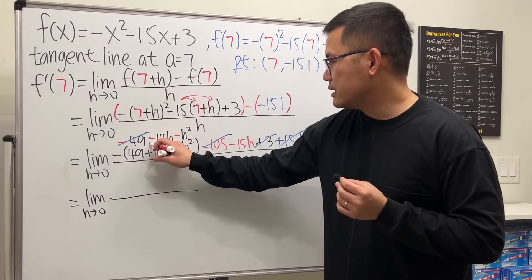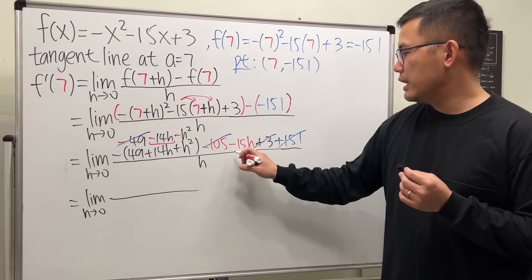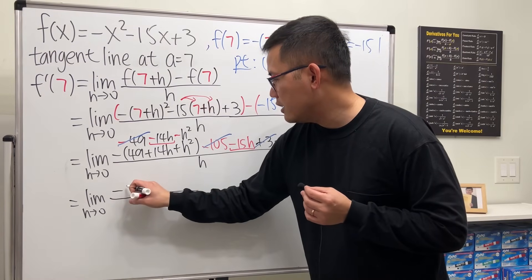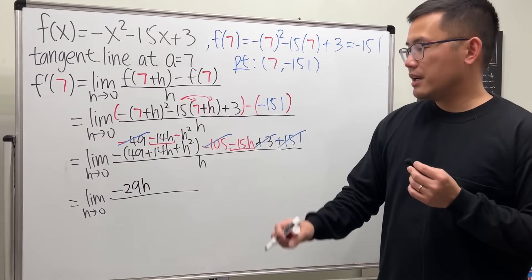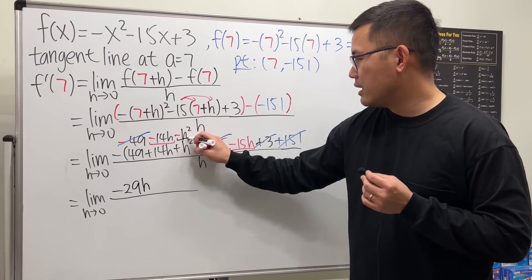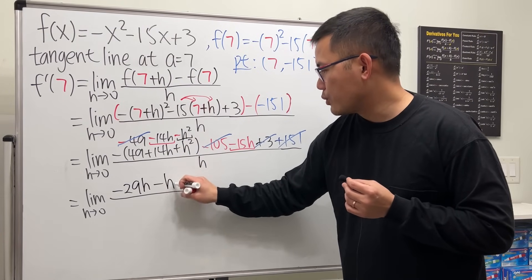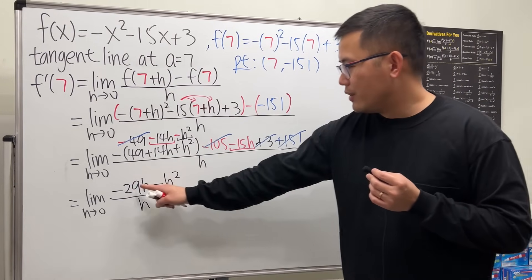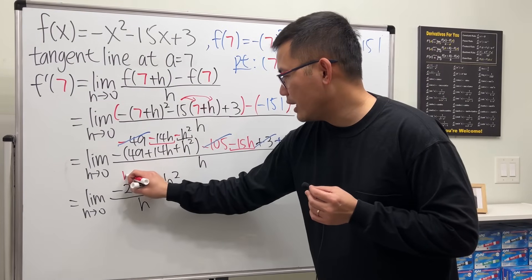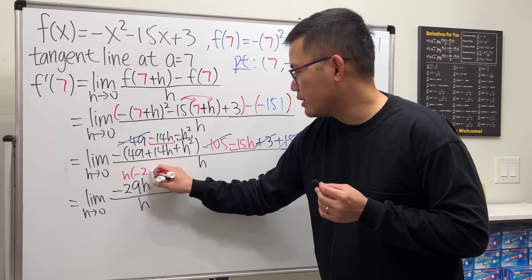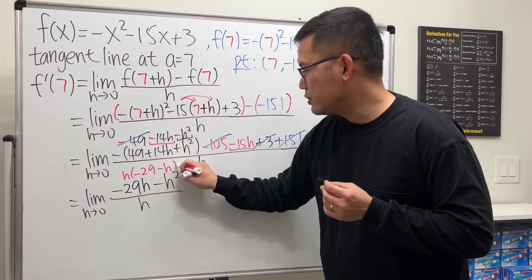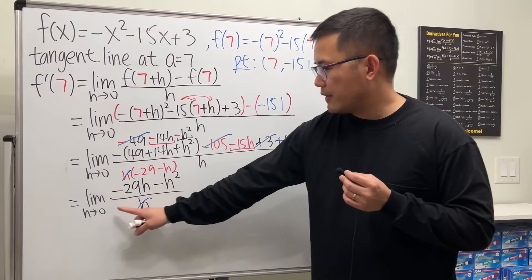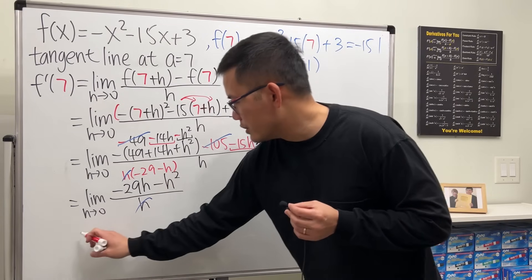Here we have the limit as h approaches 0. What do we have left? We have negative 14h and negative 15h, which combine to give negative 29h, and we still have minus h squared, all divided by h. Both terms have h, so we factor it out: h times (negative 29 minus h), and the h's cancel.